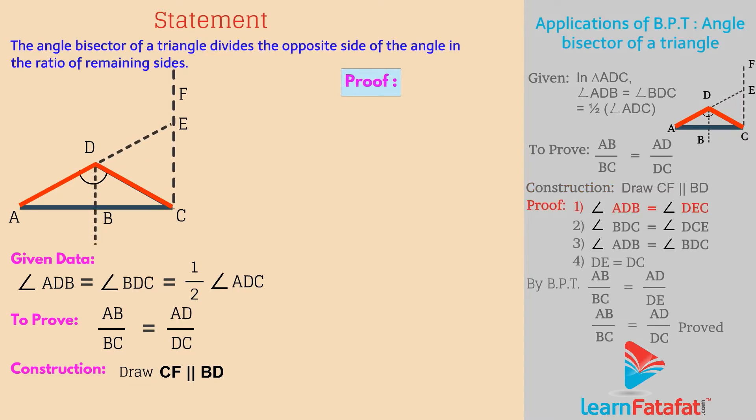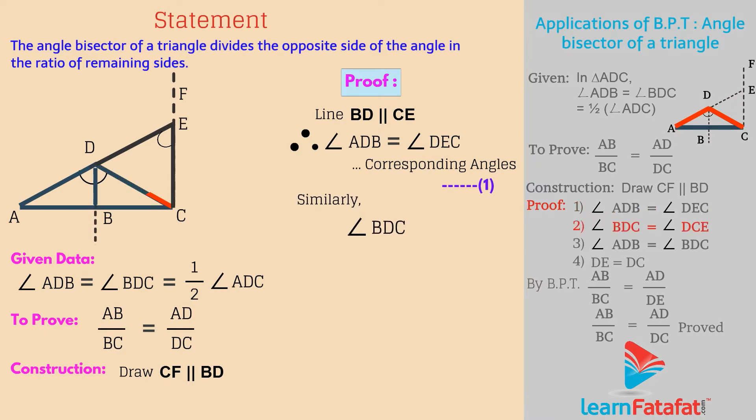Proof: Line BD is parallel to CE. Therefore, angle ADB is equal to angle DEC as these are corresponding angles. This is relation 1. Similarly, angle BDC is equal to angle DCE as these are alternate angles. This is relation 2. But we are given that angle ADB is equal to angle BDC. This is relation 3.